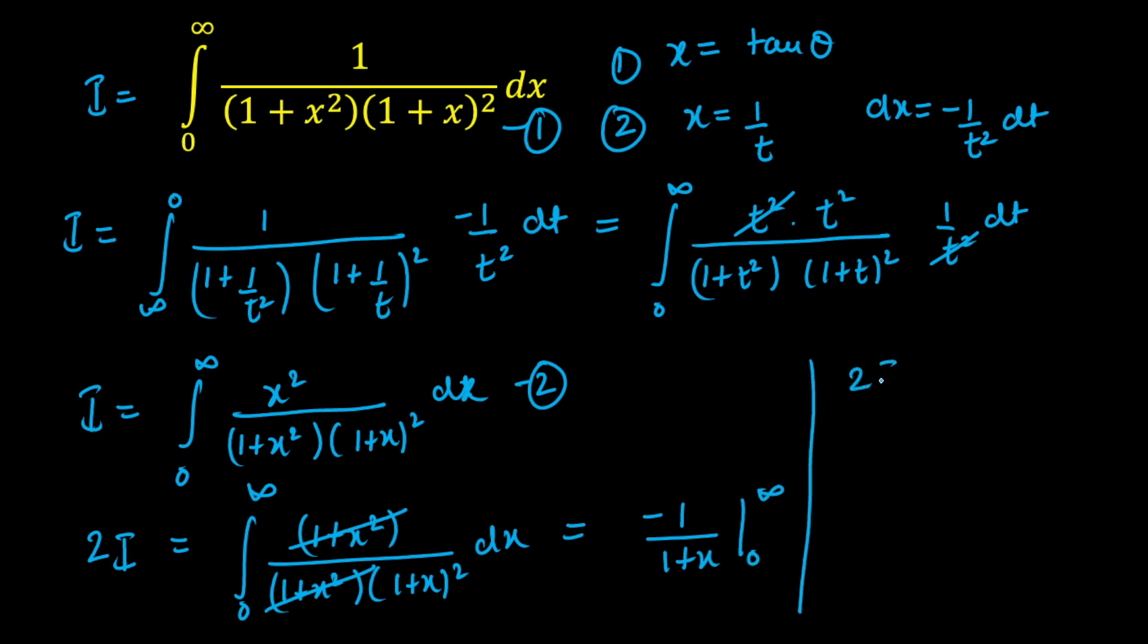Now from here we got 2i equals if you put infinity you will get 0. If you put 0 here you will get minus or minus 1 that is plus 1. So from here i will be equal to half. That's our final answer and that will be all.